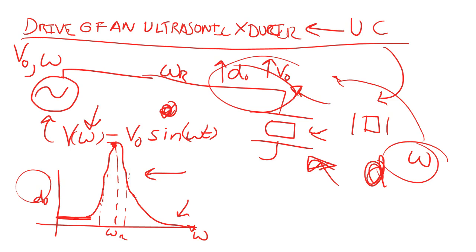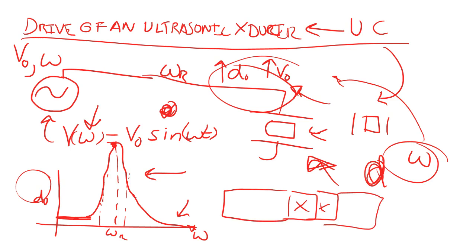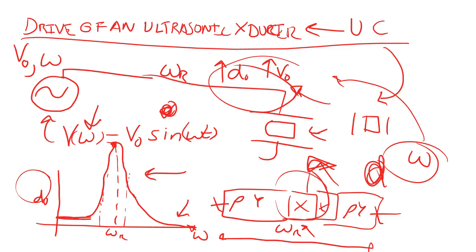Below the resonance point, we have a flat response — one displacement regardless of frequency. As we get closer to resonance, displacement increases. The transducer consists of piezoelectric crystals with a metal piece on the end. The resonance frequency depends on the mass, modulus, and geometry. We drive it at that resonance frequency for maximum displacement at the tip of the transducer.